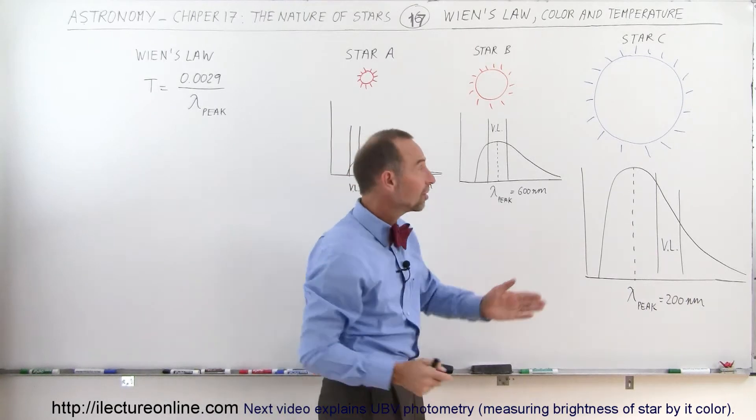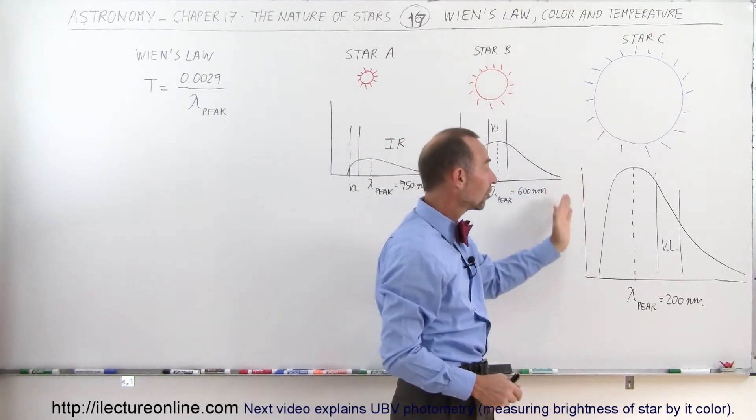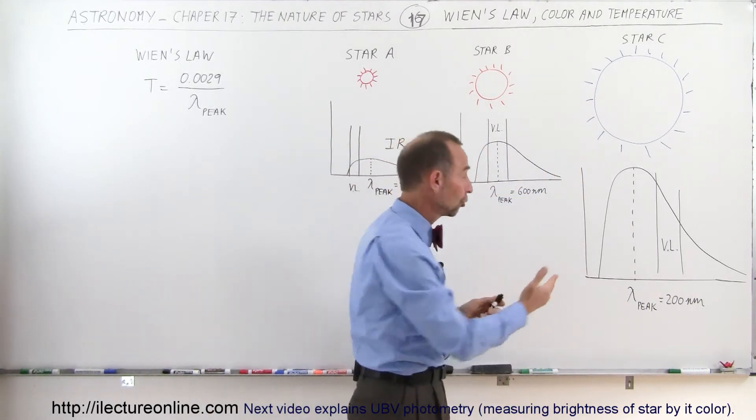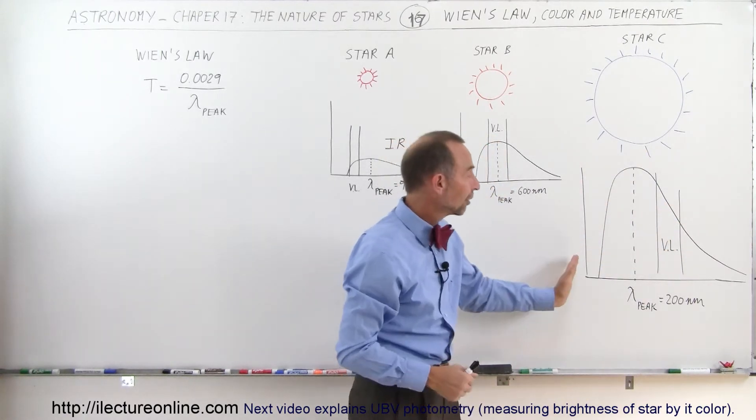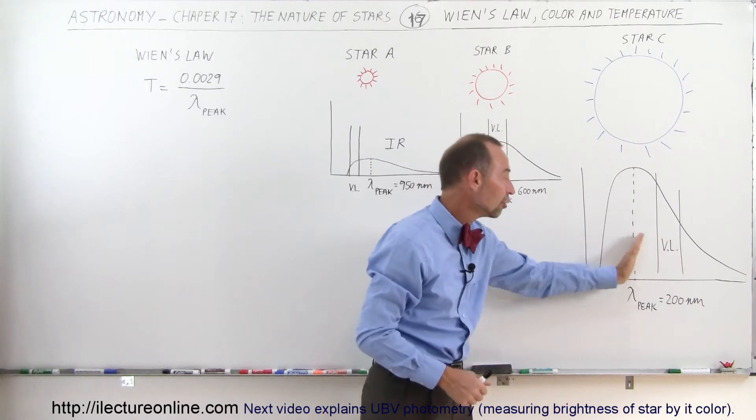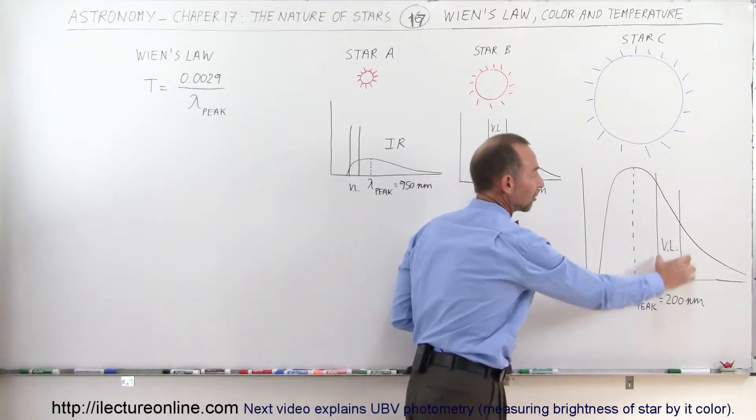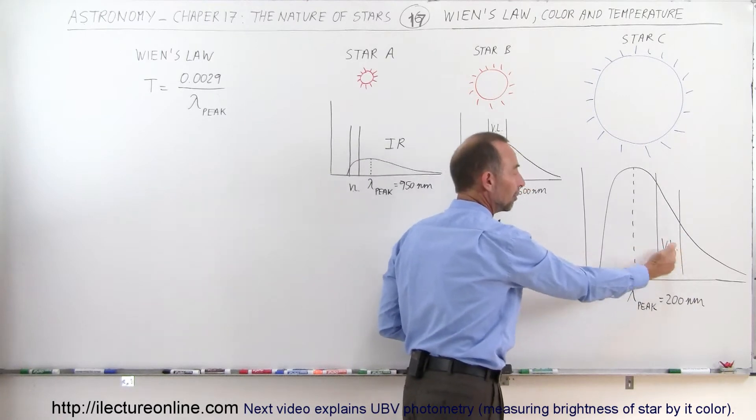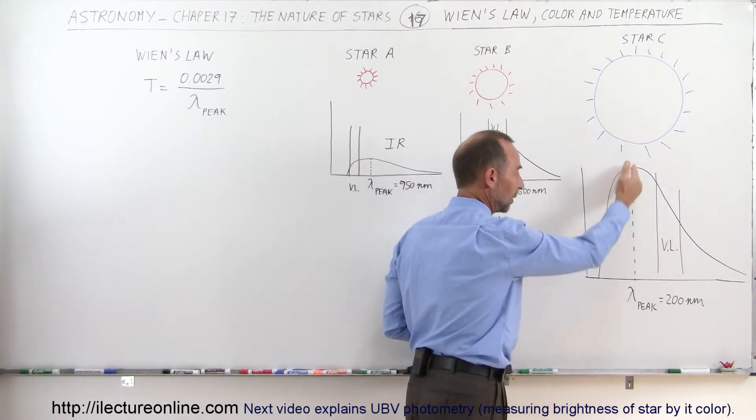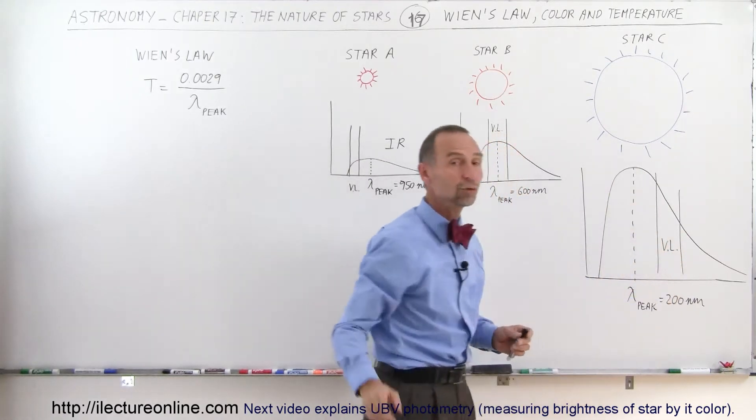For Star C, a big blue star, the radiation curve shows much more radiation—they're much more luminous—and a very large portion falls in the UV radiation. The visible light spectrum is over here, but you can see the peak occurs in the UV spectrum, let's say at 200 nanometers.